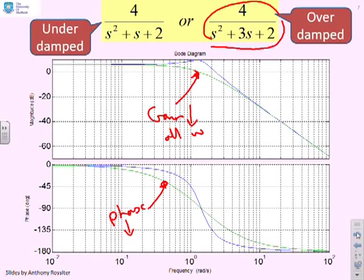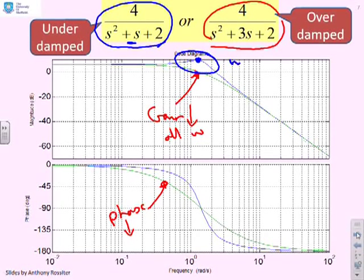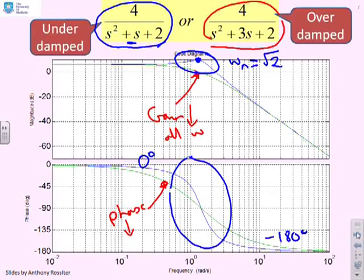What happens when we move to this underdamped variant? I've changed the coefficient for the s to make this slightly underdamped. If you look at the gain plot, there is a peak in the gain. The gain initially goes up, and the peak is not far from the characteristic frequency of root 2, slightly to the left. The transition from 0 degrees down to minus 180 degrees is much faster, much more rapid. This underdamped system has a different shape to the Bode diagram than examples with real poles.